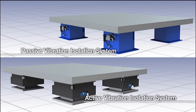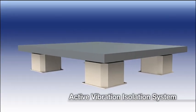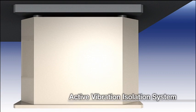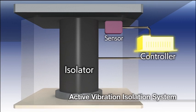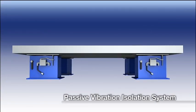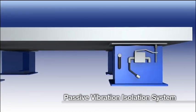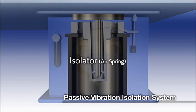Active and passive are the two types of precision vibration isolation systems. An active vibration isolator will neutralize or reduce vibration by sending opposite-phase vibrations against small vibrations caused by the installation environment or the floor itself. A passive vibration isolator uses air springs to reduce vibrations.